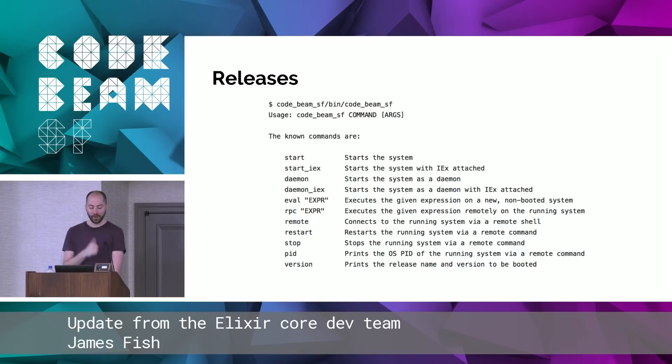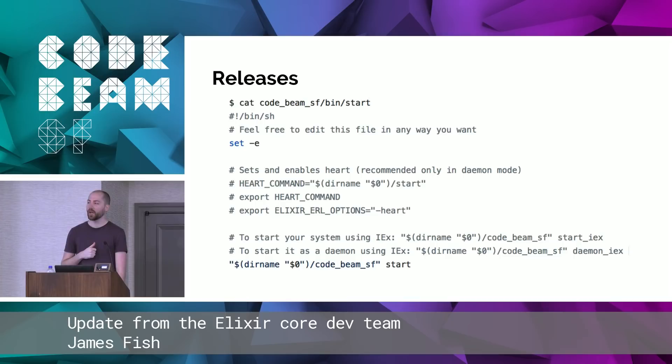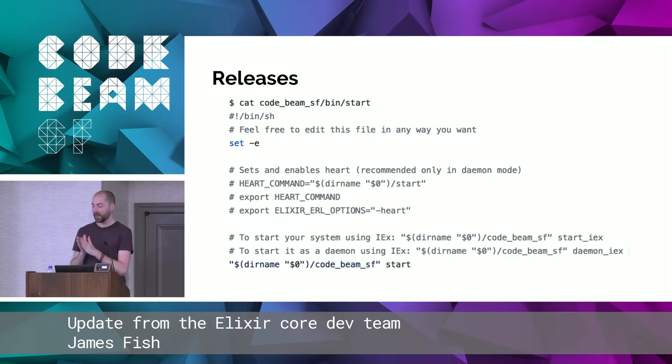The default bash script that starts your release supports: starting your system, starting with IEx as a console, starting in the background, evaluating commands against the running release, restarting, stopping, and getting the version. You can also customize how you start a release by editing the start bash script — put whatever you want there or leave it as the default. There's lots and lots of documentation; if you do mix help release, there's so much documentation I cut off pages of it.